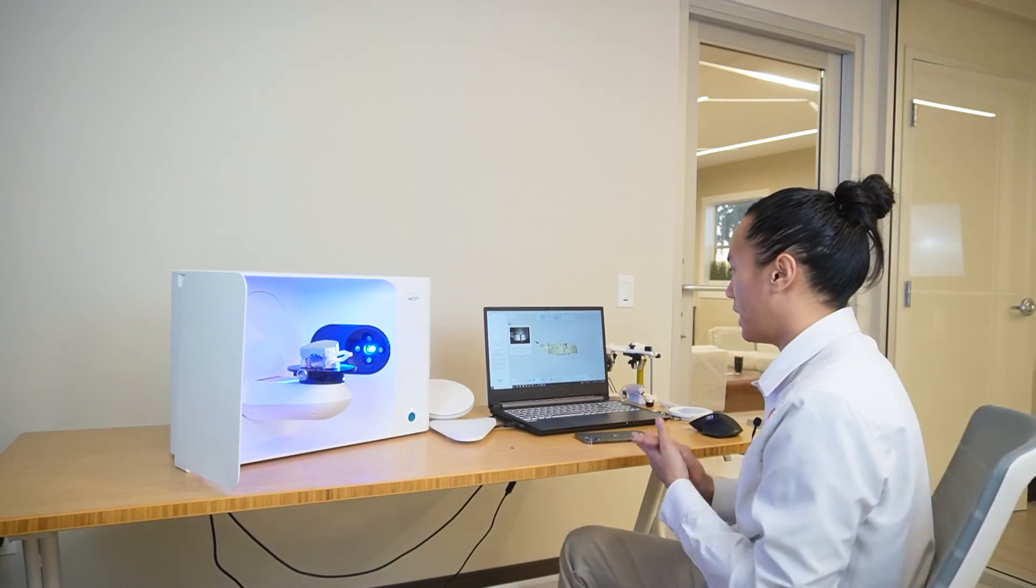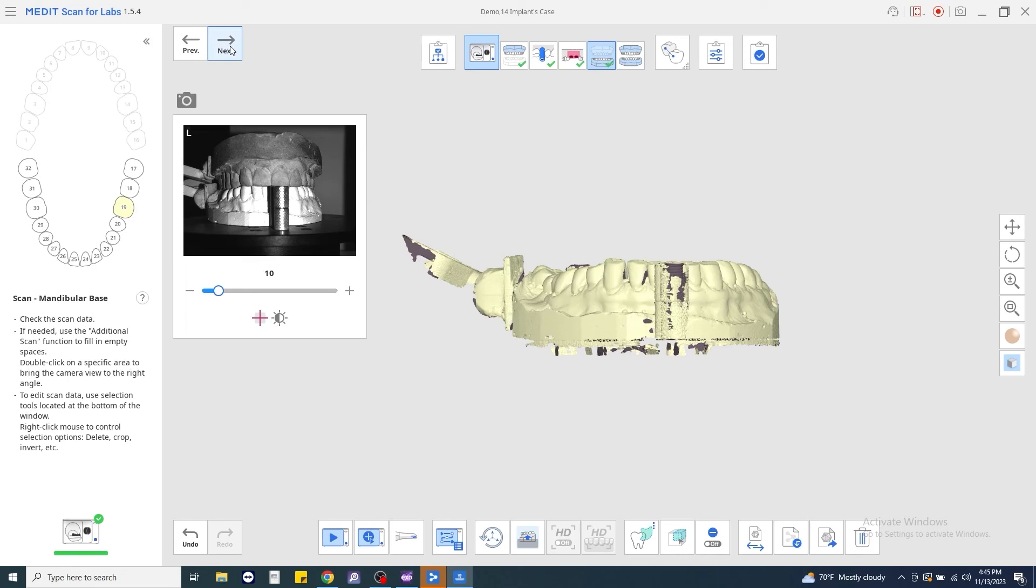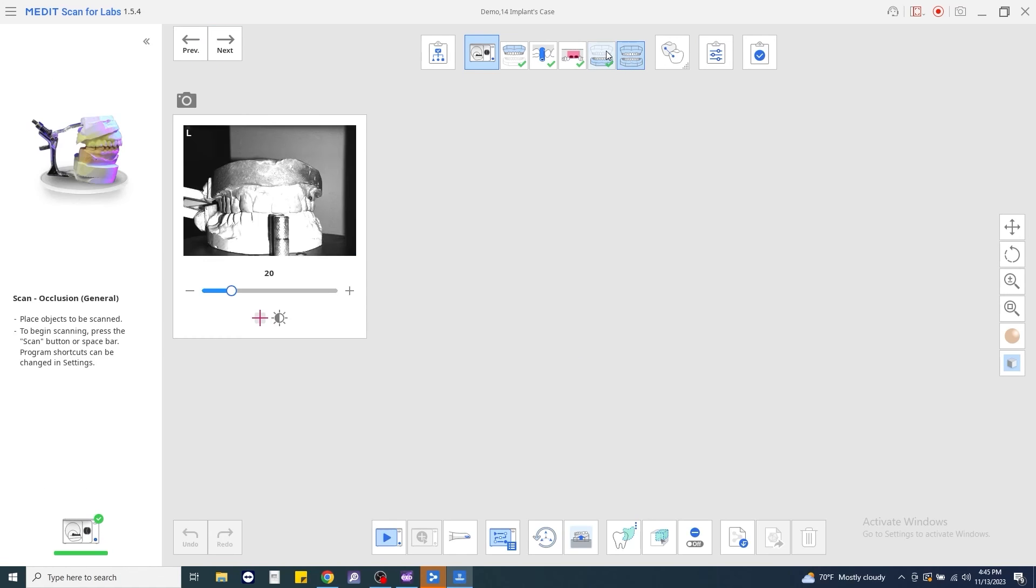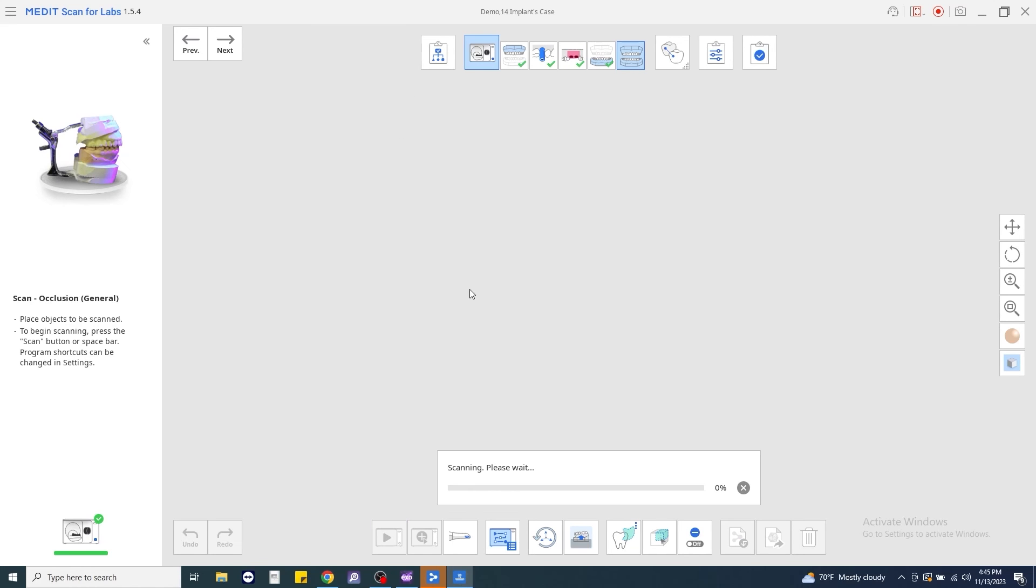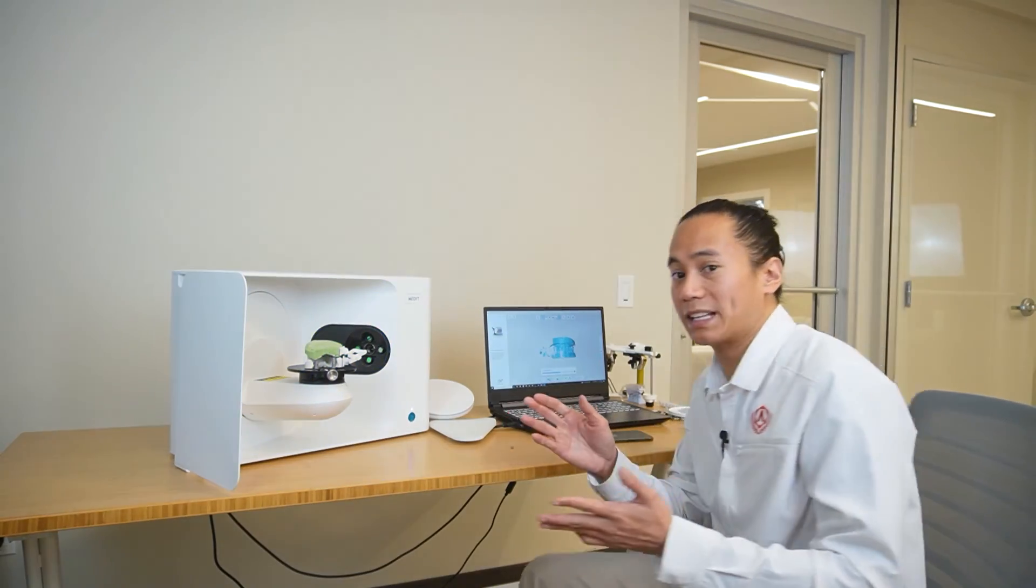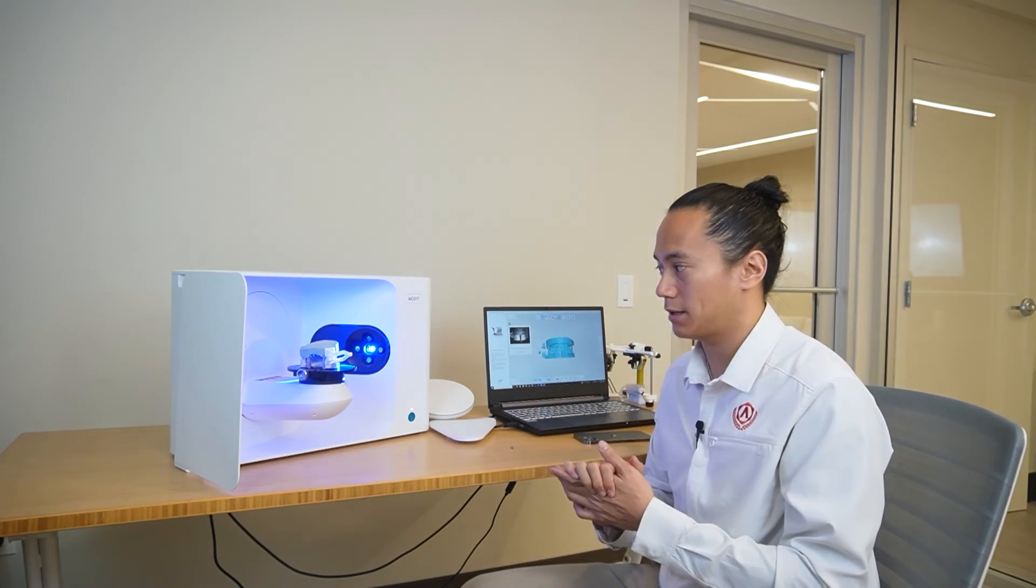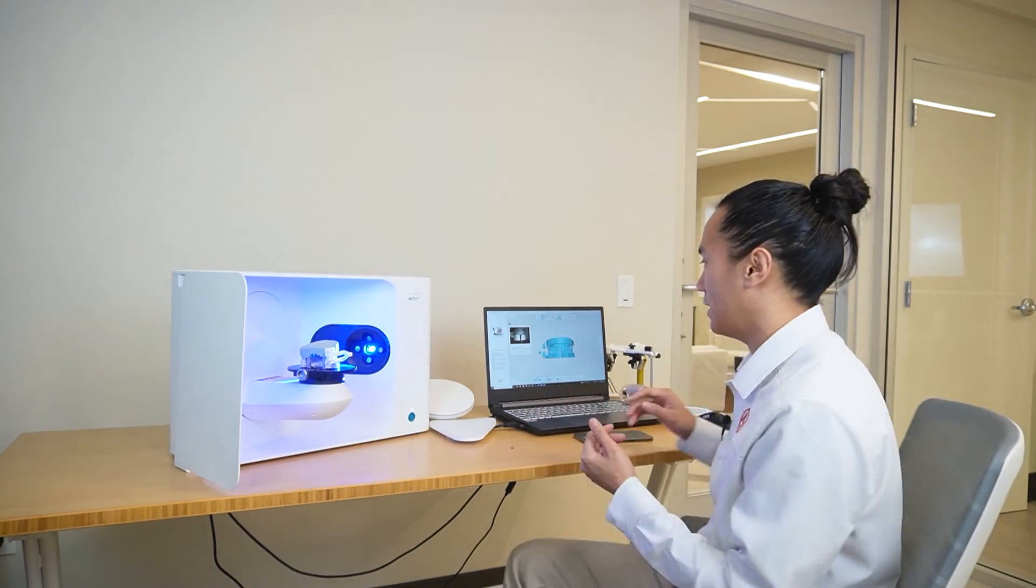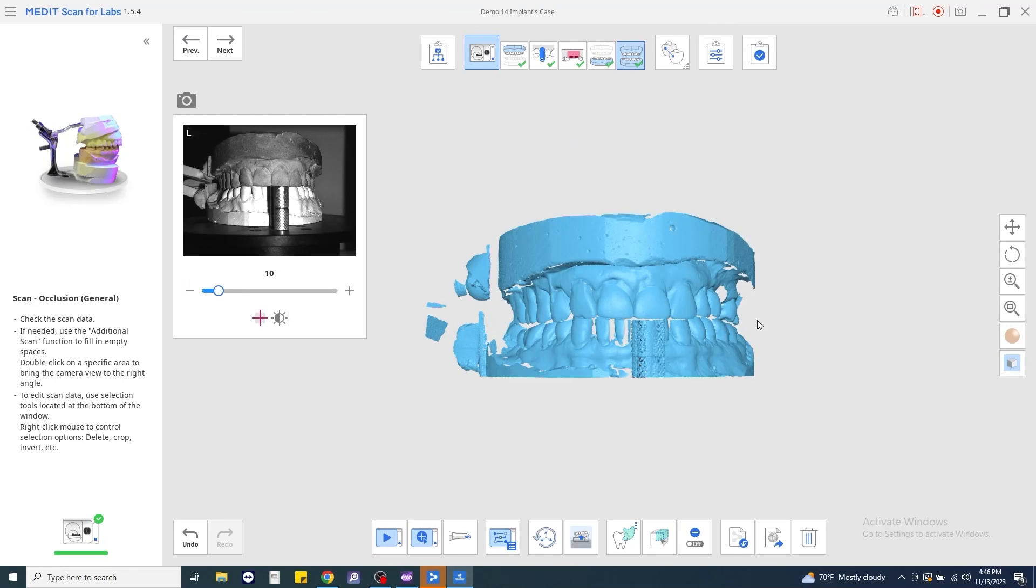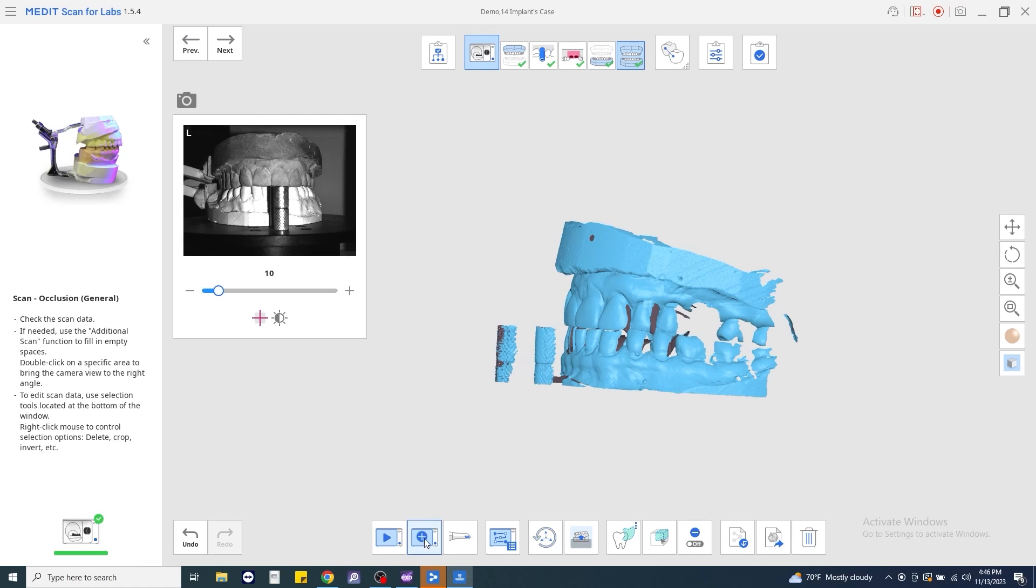As always, double check your brightness. Click Scan. We're going to actually make sure that we have it on the bite alignment step. Now, the software should automatically grab the bite data from all sides of your models. But if you need to add an additional scan, you can always rotate the image on your computer here and then click Additional Scan on the screen.